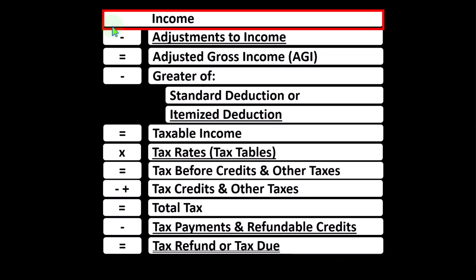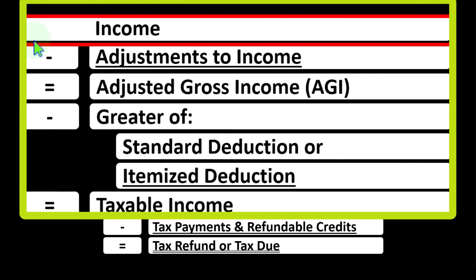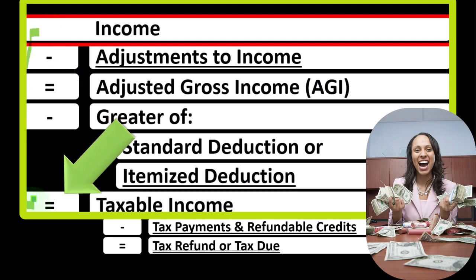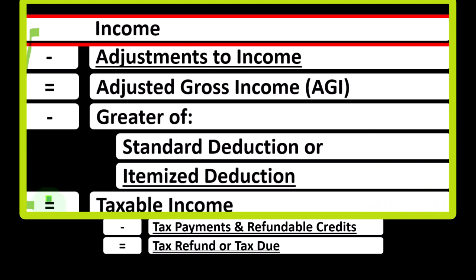We're now focusing on the first line item of our income tax formula, that being income. The first half of our income tax formula is a funny income statement, which makes sense because we have an income tax. An income statement generally consists of income or gross income minus expenses, getting us to the bottom line — typically called net income, but here we're calling it taxable income.